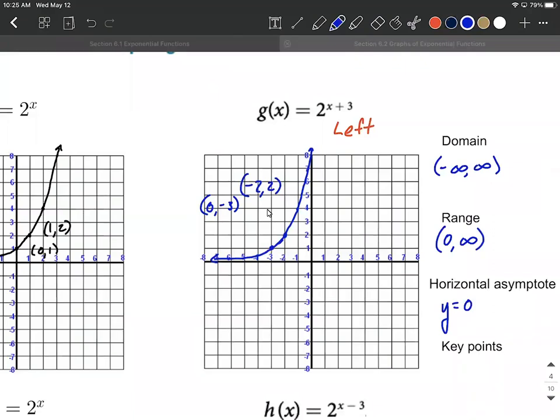Hang on. That's not 0, negative 3. That is negative 3, 1. Yeah, don't know where 0, negative 3 came from. Negative 3, 1 is this key point that I put on our graph.